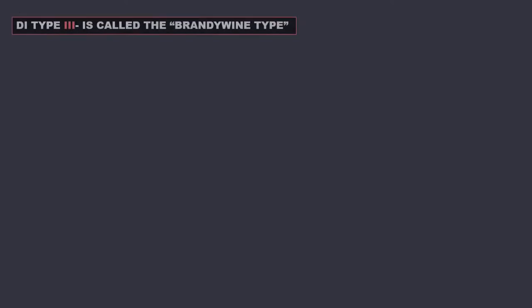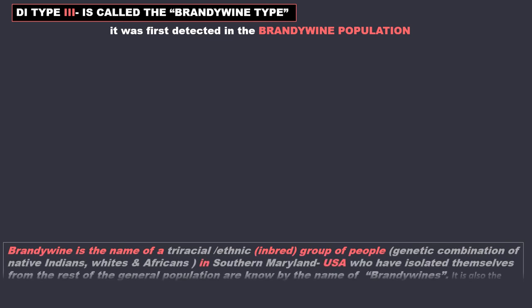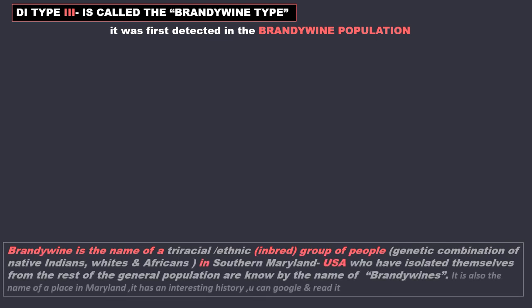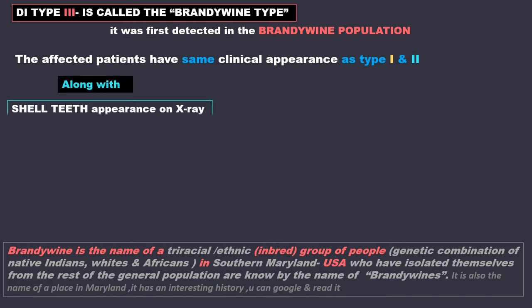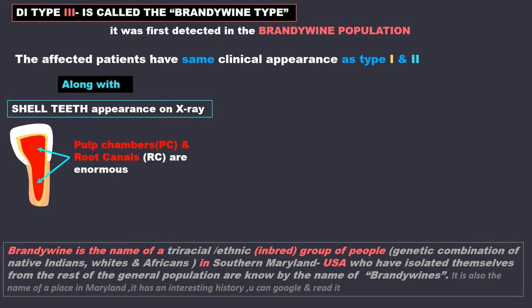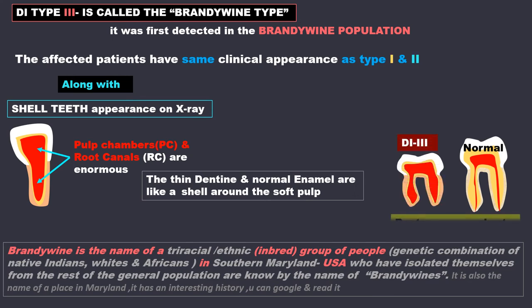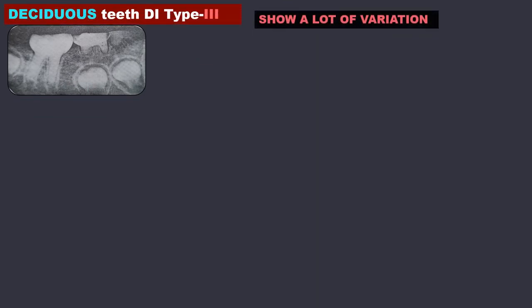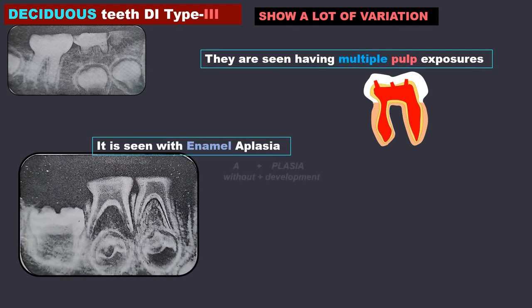DI type 3 is called the Brandywine type. It was first detected in the Brandywine population, a group of people in the USA. The affected patients have the same clinical appearance as type 1 and type 2, along with certain other special features like shell teeth appearance on x-ray. It is called so because the pulp chambers and root canals are enormous — the thin dentine and normal enamel are like a protective shell around the soft pulp, like an egg shell or a snail shell. Here again the roots are very short. Deciduous teeth in DI type 3 show a lot of variations, including multiple pulp exposures, and can be seen with enamel aplasia where enamel is not developed properly. The teeth can also be normal.